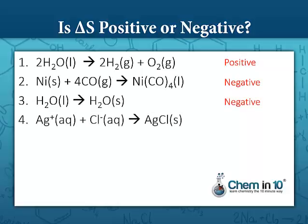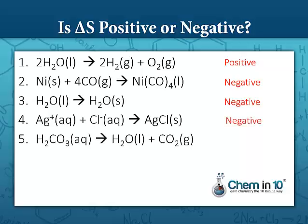Here we have silver ion plus chloride ion coming together to form the precipitate, solid silver chloride. Since we're having two particles come together into a solid, entropy is negative. Carbonic acid becoming water and carbon dioxide: one compound is becoming two compounds, and one of those is a gas, so entropy change is positive.